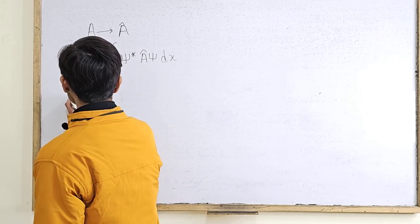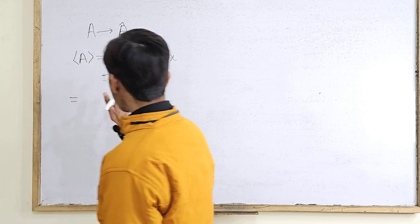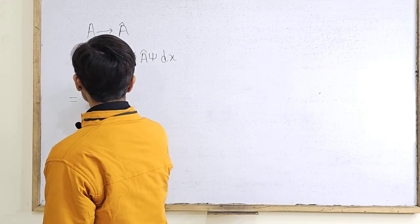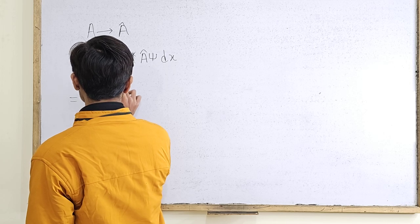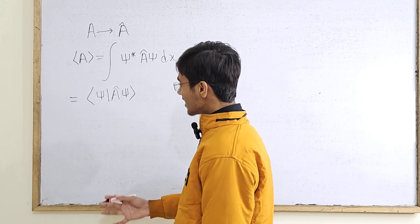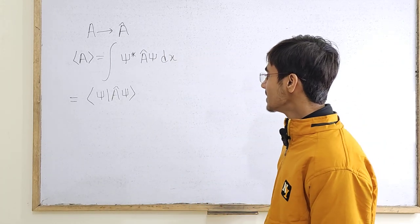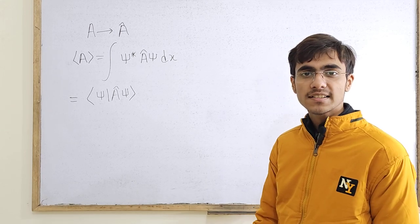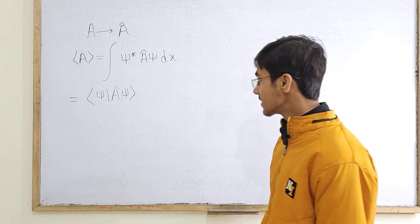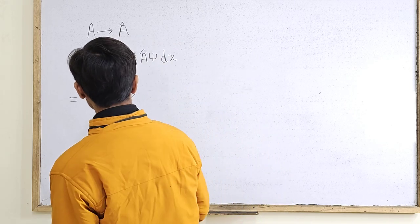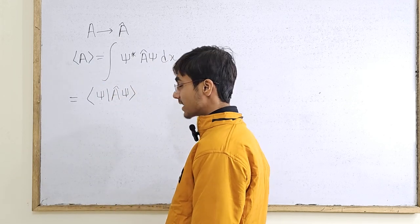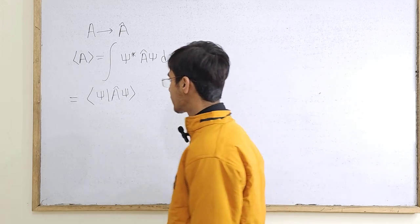You might as well say that if you define psi and A-hat psi as functions — which they of course are — this is the inner product of two functions: psi and A-hat psi. Functions are vectors in infinite-dimensional space, so functions are basically vectors at the end of the day. That is why we define inner products for functions, just as we do for vectors.